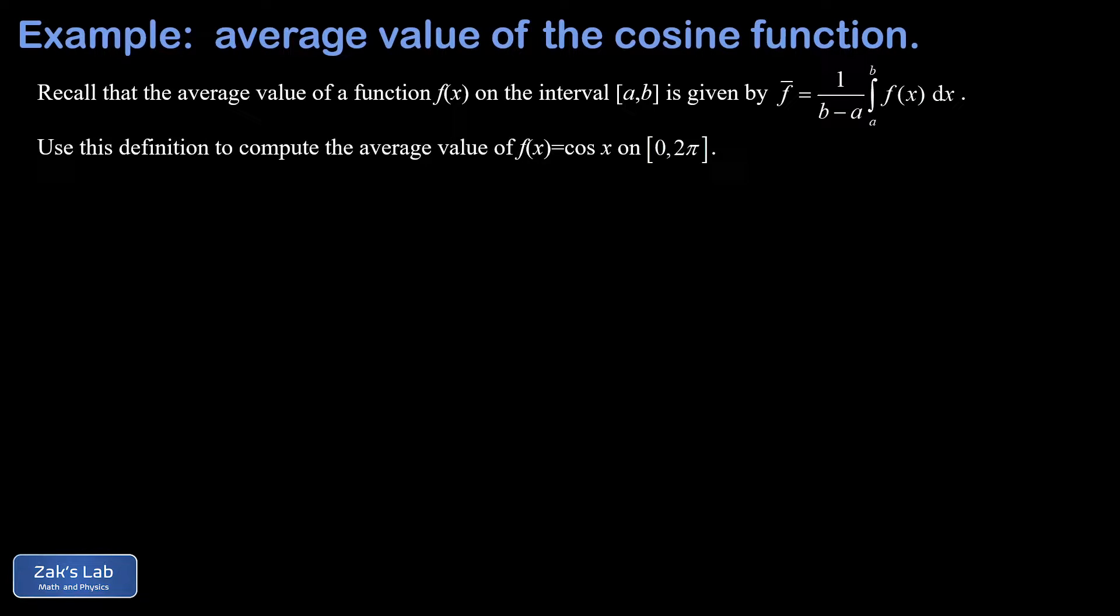In this video we're computing the average value of the cosine function on the interval zero to two pi. We're reminded in the problem the definition of average value: the average value of a function on an interval a to b is one divided by the interval width.